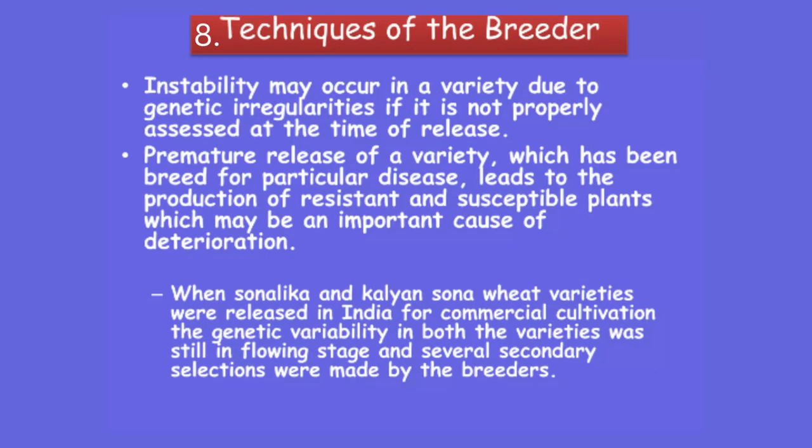The eighth factor is techniques of the plant breeders. Whatever instability occurs is due to some genetic irregularities, if not properly assessed at the time of release of the variety — such as in the case of premature release. This leads to the production of both resistant and susceptible plants, which may be an important cause of deterioration. One important example is the Sonelika and Kalyan Sona varieties of wheat released in India for commercial cultivation, where genetic variability in both varieties was still in a segregating state and several secondary selections were made by different wheat breeders.